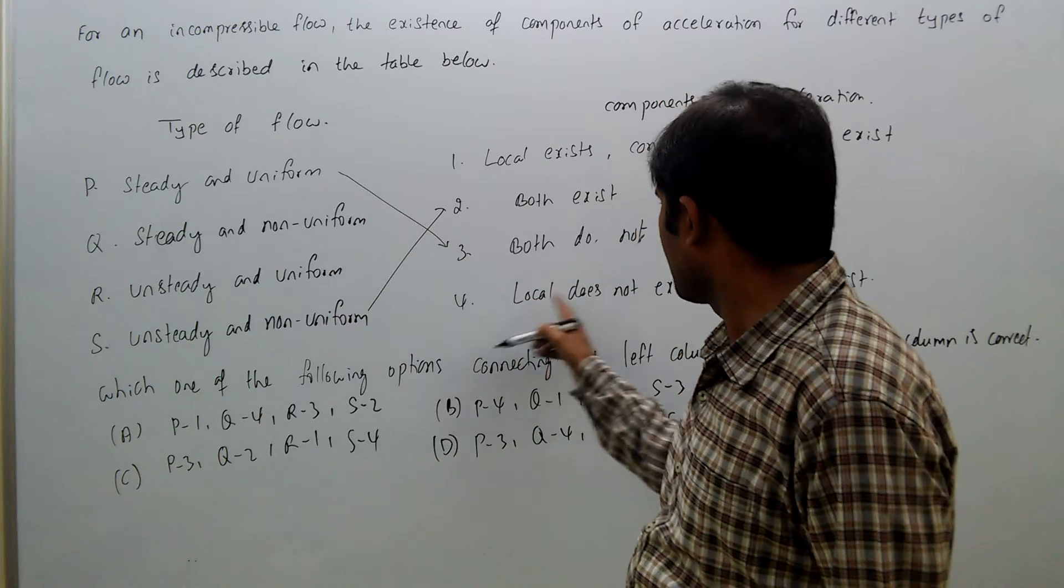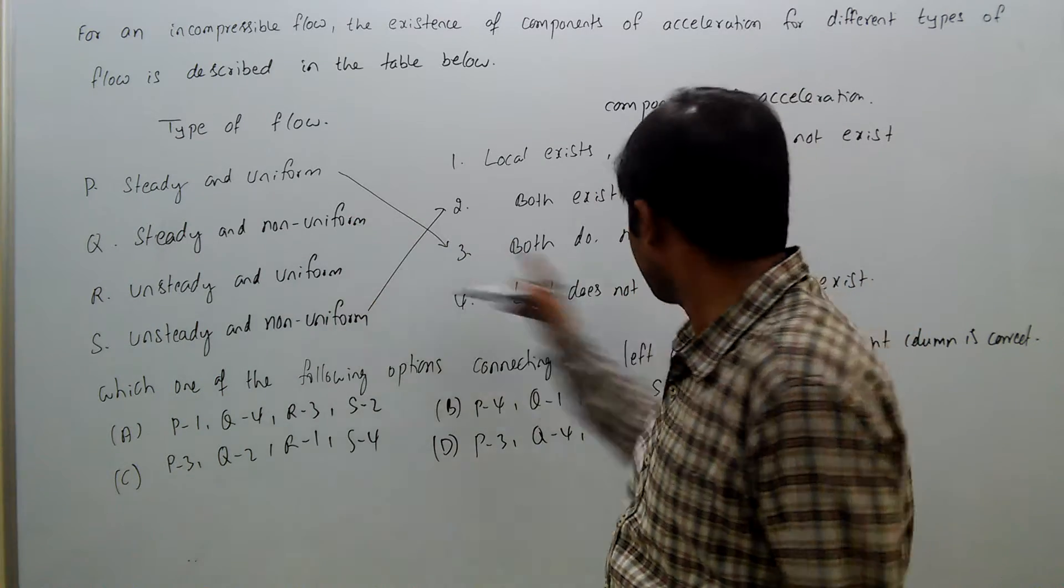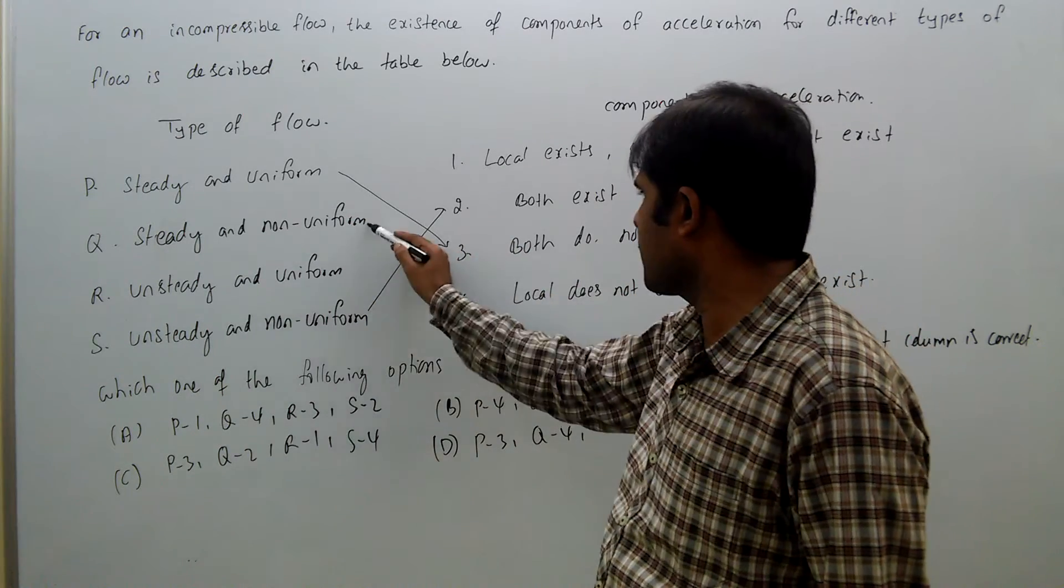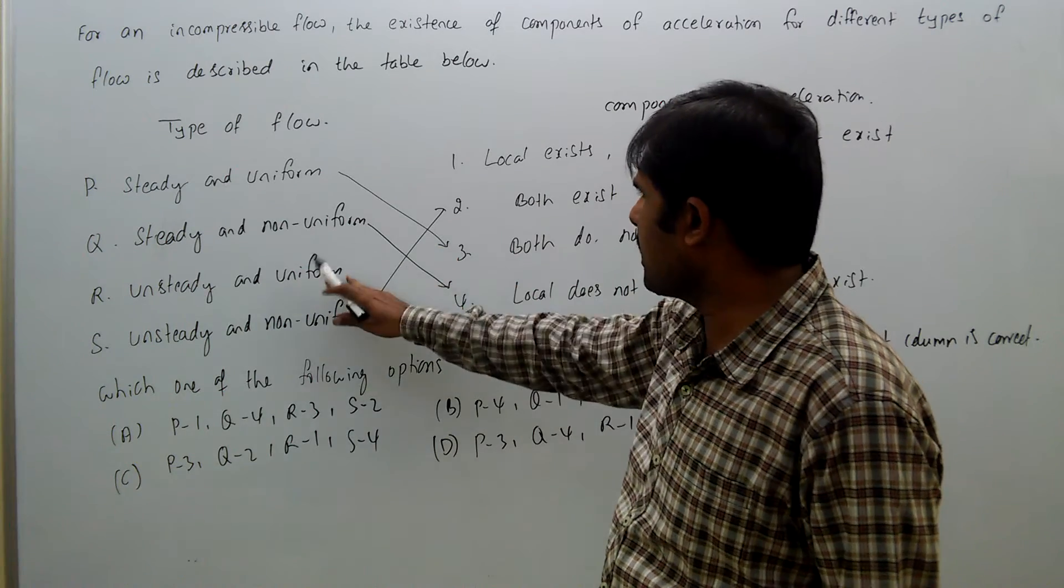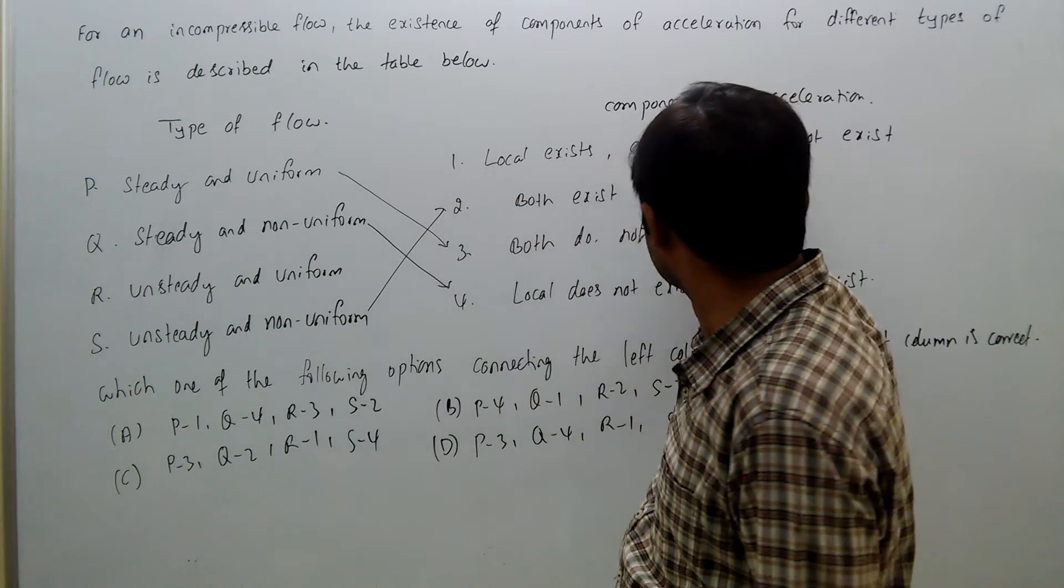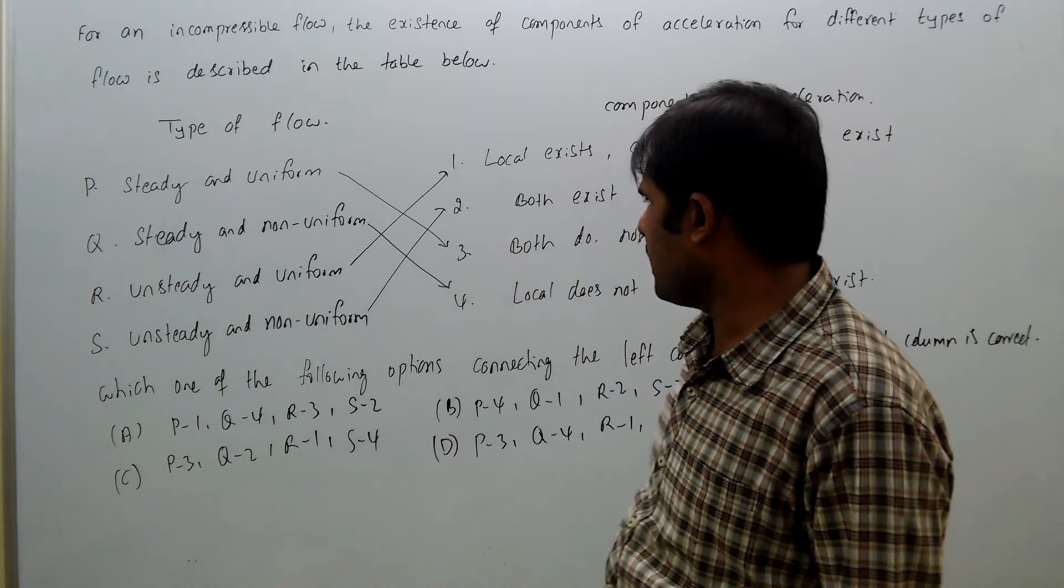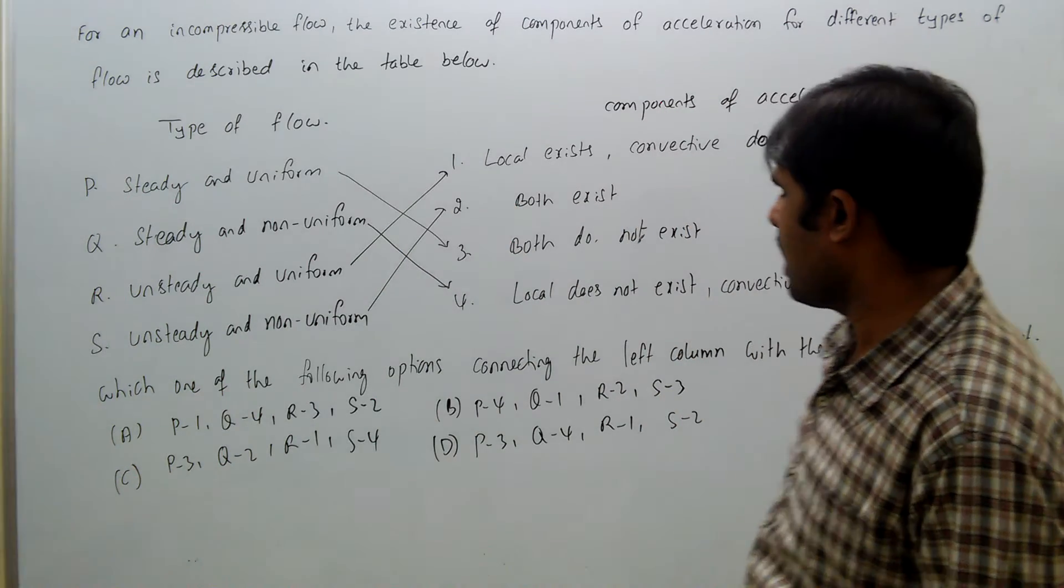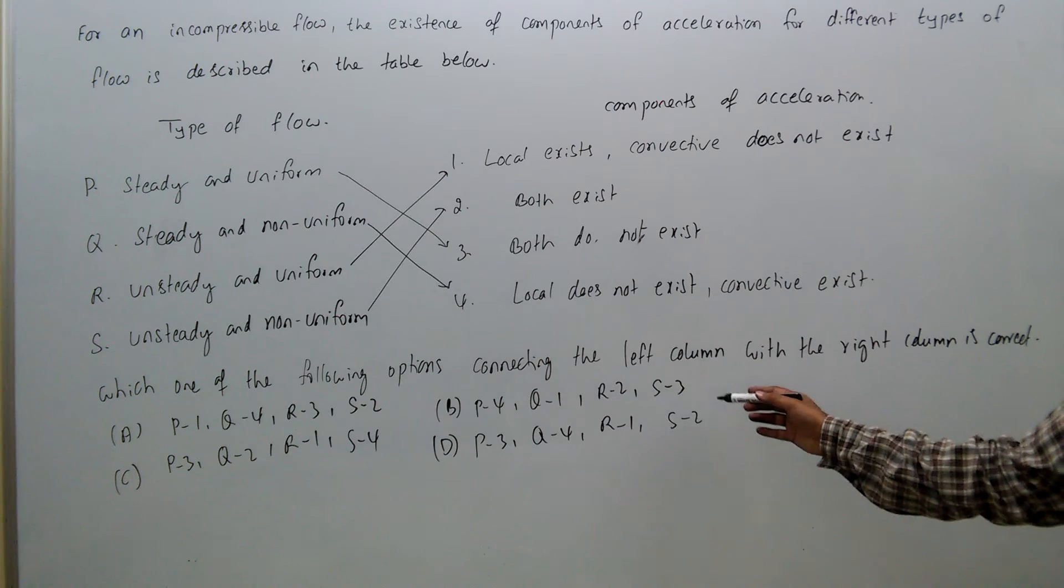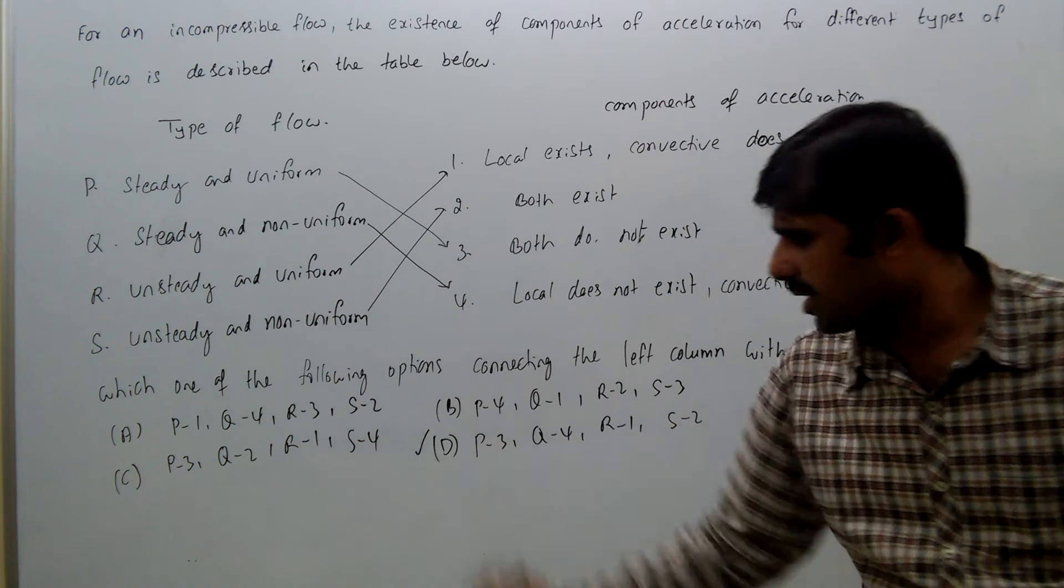For steady non-uniform, local does not exist but convective exists, so Q is 4. For unsteady uniform, local exists but convective does not exist, so R is 1. Therefore P3, Q4, R1, S2 - Option D is the correct answer.